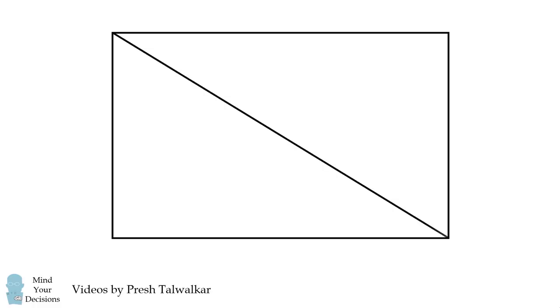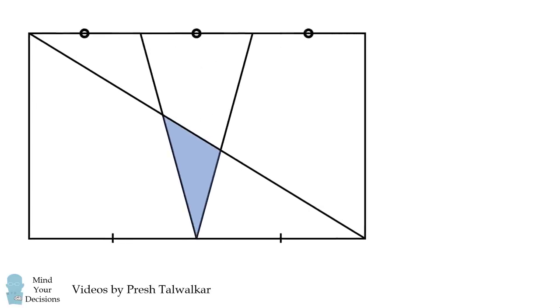Start with a rectangle and construct one of its diagonals. From the midpoint of the bottom side, construct two line segments that trisect the top side. Then consider the following triangle. If the rectangle has an area equal to 10, what is the area of this triangle?